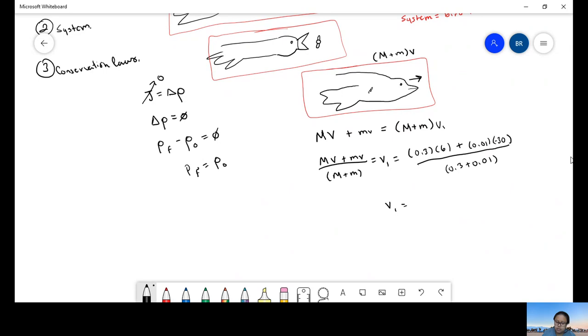We have 1.8 minus 0.3 over 0.31. So 1.8 minus 0.3 is 1.5. So we have a speed of 4.838 meters per second. And that's our answer.